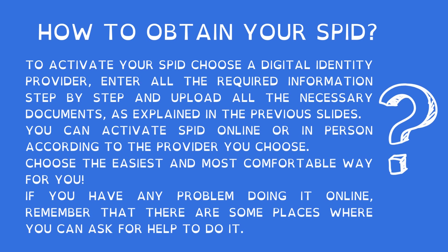How to obtain your speed? To activate your speed, choose a digital identity provider. Enter all the required information step by step, and upload the necessary documents as explained in the previous slides. You can activate speed online or in person, according to the provider you choose. Choose the easiest and most comfortable way for you. If you have any problems doing it online, remember that there are some places where you can ask for help.